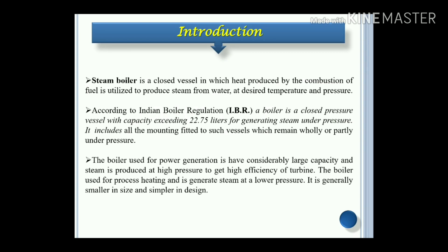The boiler used for power generation is considerably heavy, large capacity, and steam is produced at a higher pressure to get high efficiency of the turbine. The boiler used for process heating generates steam at a lower pressure. It is generally smaller in size and simpler in design.